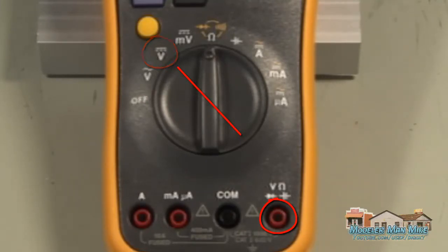And if you want to test amperage you would turn the dial to amperage and then plug your red lead into the amperage port.